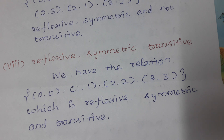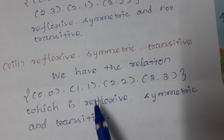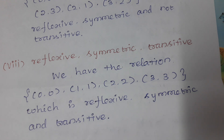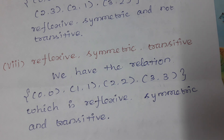Last one: reflexive, symmetric, and transitive. We have the relation {(0,0),(1,1),(2,2),(3,3)}, which is reflexive, symmetric, and transitive. You can see this in Example 1.10 as well. Thank you for watching this video — have a great time. Next video: Exercise 3.4 solution.